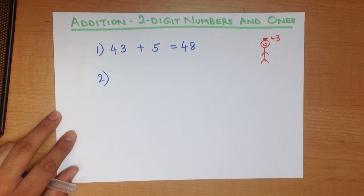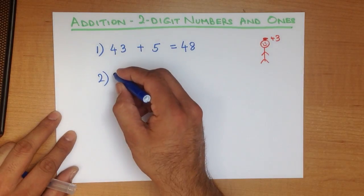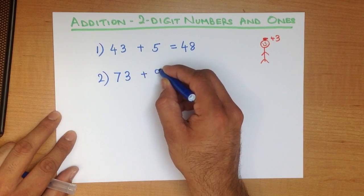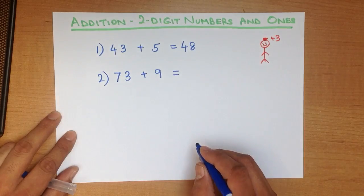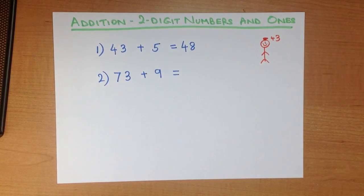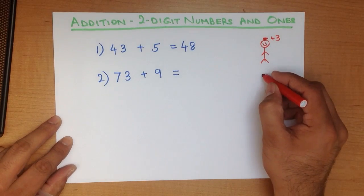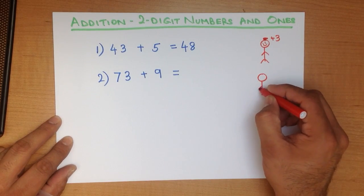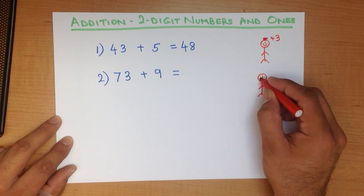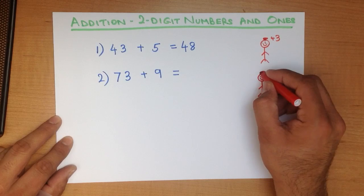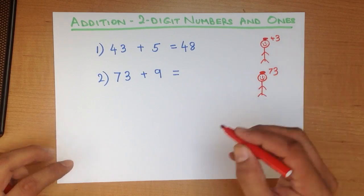Let's work through another example. What is 73 plus 9? I'm going to draw the little figure again. So this is me. I've got a smiley face. And I'm going to say there is 73 on my head.